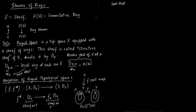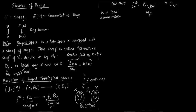This morphism of ringed spaces also satisfies one extra condition: we take special care of the map between the stalks. The stalk at Y comma F of x, and the map from O_{X,x} — this is a local homomorphism, meaning the maximal ideal here gets mapped to the maximal ideal there.